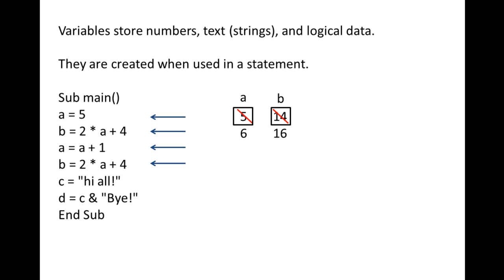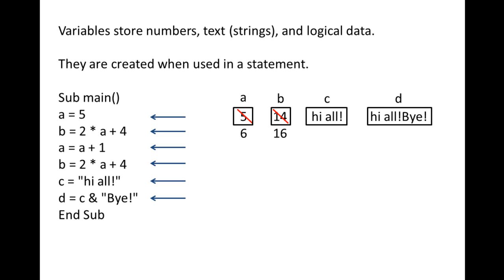The variables a and b store numbers. Strings, which are groups of one or more text characters, can be stored in variables too. The fifth statement — c equals "hi all!" — creates the variable c and stores the text "hi all!" in that variable. The text you wish to store in a string variable must be written within quotation marks. You can stitch strings together using an ampersand, which is called the concatenate operator. The sixth statement is d equals c ampersand "bye!". The characters "bye!" are stitched to the end of the string variable c, and the resulting string, "hi all! bye!", is stored in d.